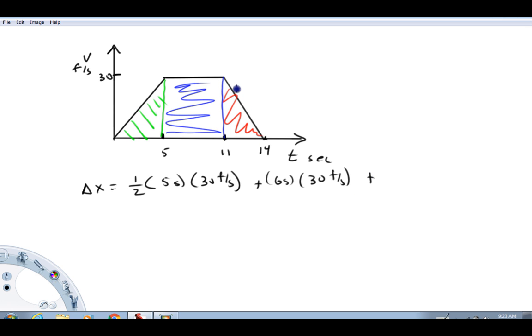The last area is triangular. Because it's a triangle, one half, and the base - don't use the 14 here - the base is this distance, which is three seconds, times the height, which again is 30 feet per second.